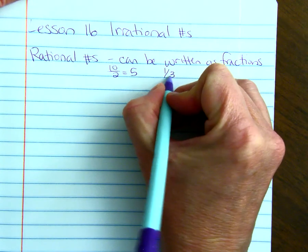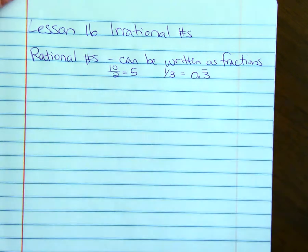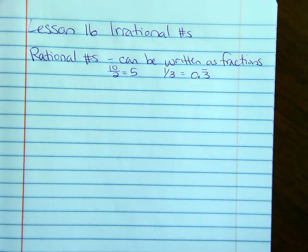One-third, which as a decimal, 0.3 with the vinculum. That's a rational number because it can be written as a fraction.